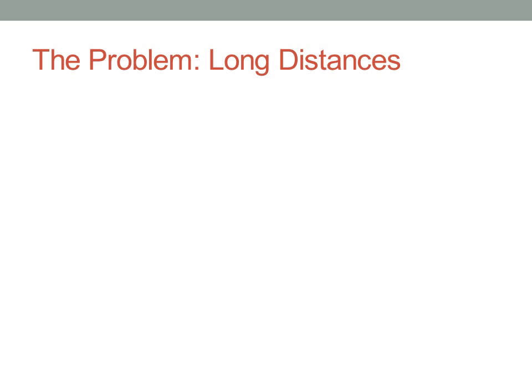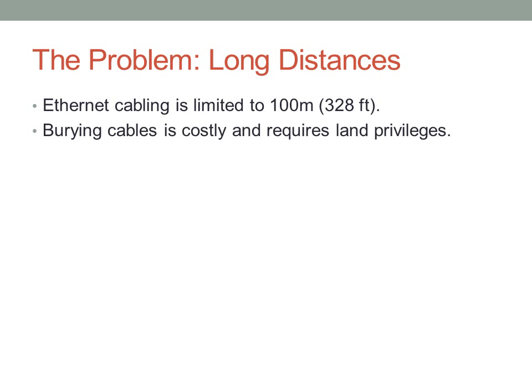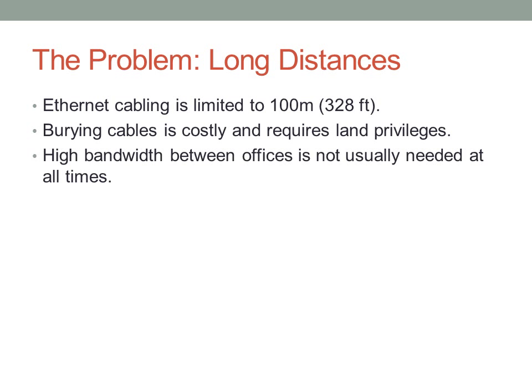The problem with Ethernet is that it's not very good at long distances. Ethernet cabling is limited to 100 meters, and burying cables is costly and requires LAN privileges — in other words, you need to actually own the LAN between where you're starting and wherever you want to go. High bandwidth between offices is usually not needed; you may only need 64 kbps at any given point.